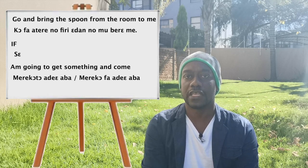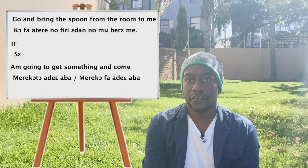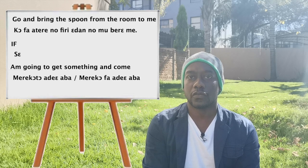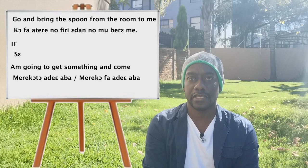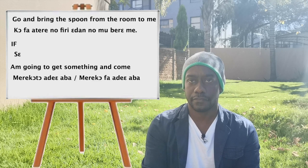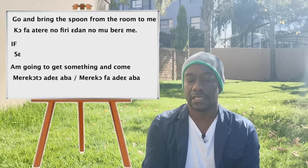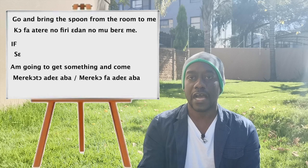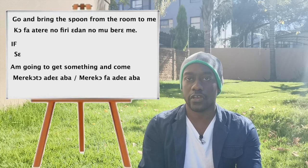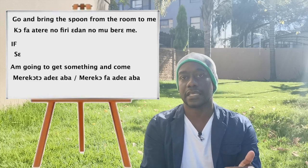Jew also wanted to know what 'if' is in Chi — 'if' in Chi is 'se.' He also wanted to know 'I'm going to get something and come.' In Chi that is 'me ko fa adia ba': meko is 'I'm going', fa is 'take', adia represents a specific object, and ba means 'and come back.'